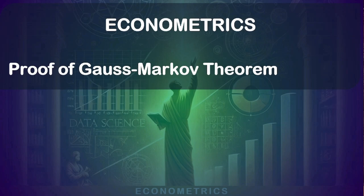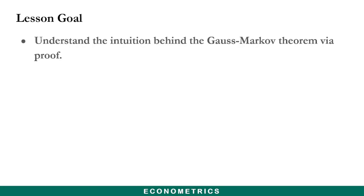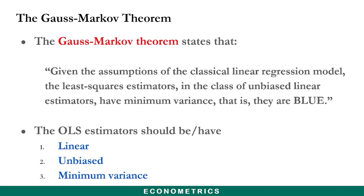Hello everyone. In this lesson, we look at the proof of the Gauss-Markov theorem. By the end of this lesson, you will understand the intuition behind the Gauss-Markov theorem. The Gauss-Markov theorem states that, given the assumptions of the classical linear regression model, the least squares estimators in the class of unbiased linear estimators have minimum variance — that is, they are BLUE.